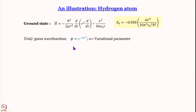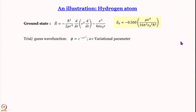Let us take a trial wave function φ = e^(−αr²), where α is the variational parameter. I am choosing this Gaussian function for two reasons: first, it is well-behaved and goes to zero at r → ∞. Second, I already know the 1s wave function is something like e^(−kr) — an exponential decay. So I am comparing a Gaussian decay to an exponential decay.